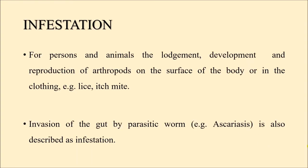Infestation: for persons and animals, the lodgment, development, and reproduction of arthropods on the surface of the body or in the clothing — for example, lice, mites, etc. Arthropods lodge, develop, and reproduce on the surface of the body. They can also get inside the body; for example, gut infestation can occur in ascariasis. This is infestation, mostly for arthropods occurring on the surface of the body.